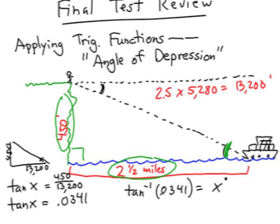So on your calculator, put in the value 0.0341, find the inverse tangent function, and it will give you the answer. The unknown angle of depression, which is also the angle of elevation from the ship, is going to be about 2 degrees.